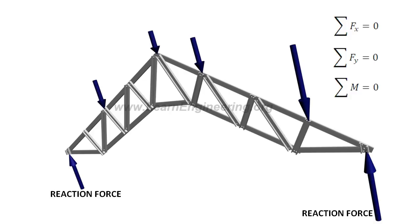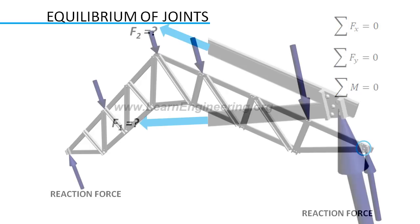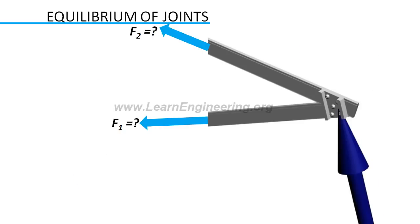After determining the reaction forces, next step is to apply concept of equilibrium of joints. Consider a joint where there are not more than two members in which forces are unknown. Two unknowns, because we have only got two equations of equilibrium to solve them.